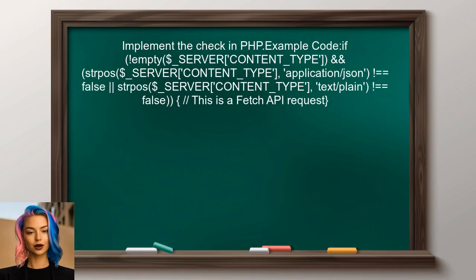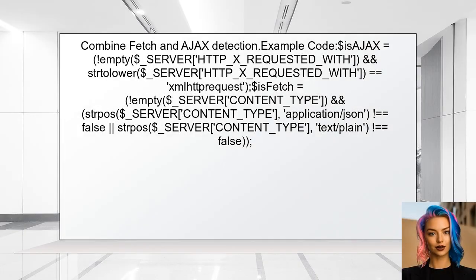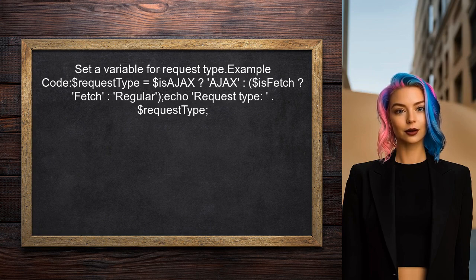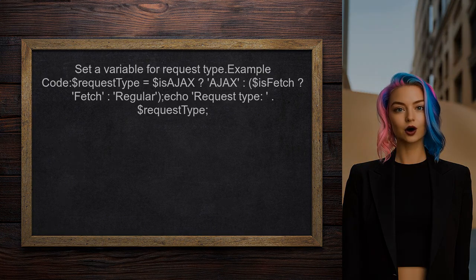You can implement this check in your PHP code by creating a condition that checks if the Content-Type header matches one of the expected values. Additionally, you can combine this check with the existing Ajax detection method for a more comprehensive solution, so that both fetch and traditional Ajax requests can be identified. Finally, you can use these checks to set a variable indicating whether the request is from fetch or Ajax, which helps in handling requests appropriately in your application.